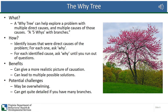Let's talk about the why tree. A why tree can help explore a problem with multiple direct causes and multiple causes of each of those causes. It's basically doing the five whys, but with branches. First, you would identify the issues that were the direct cause of the problem. For each one, you would then ask why, and for each identified cause you would ask why until you run out of questions. The benefits are that it can give you a more realistic picture of causation and can lead to identifying multiple possible solutions. However, it can be overwhelming to approach the problem in this way, and it can get quite detailed if you have many branches.